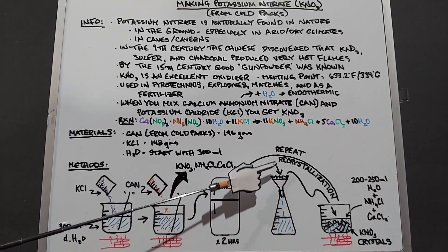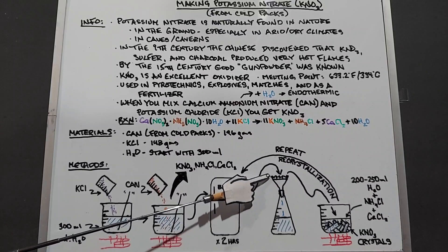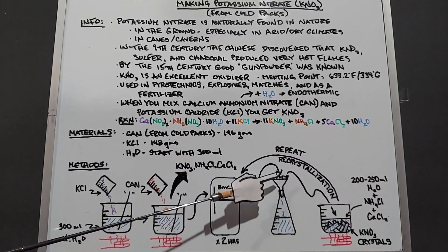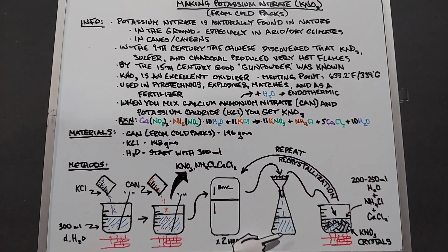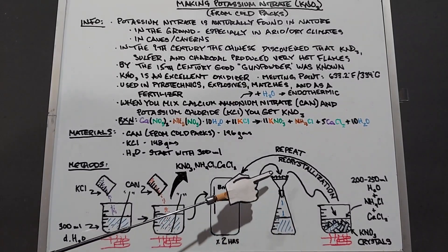You want to save the solid. The solid is going to be mostly potassium nitrate, but in the mix of that will be some trapped ammonia chloride and calcium chloride. Down here you'll have mostly ammonia chloride and calcium chloride in the solution, but there will be small amounts of potassium nitrate that you lose.